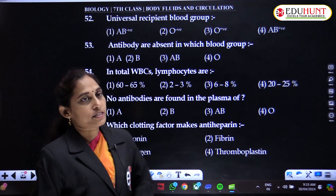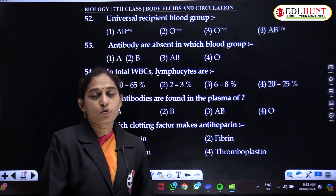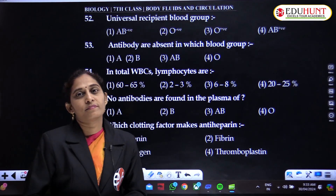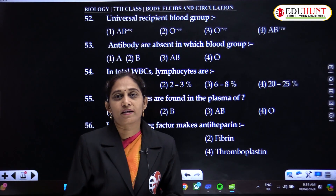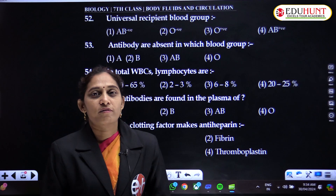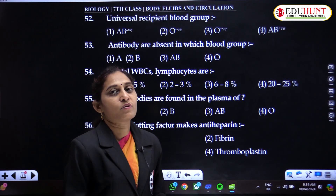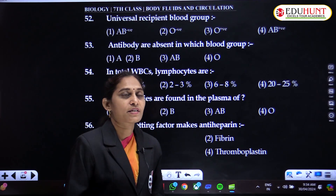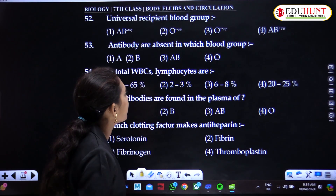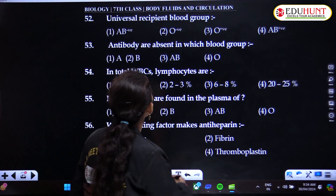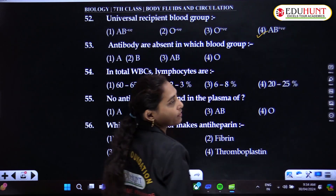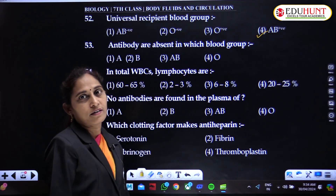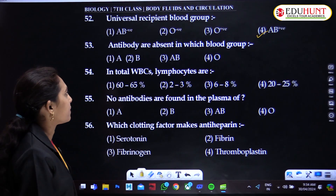Universal recipient blood group — universal donor is O and universal recipient is AB. So AB positive is the universal recipient, and O negative is the universal donor.